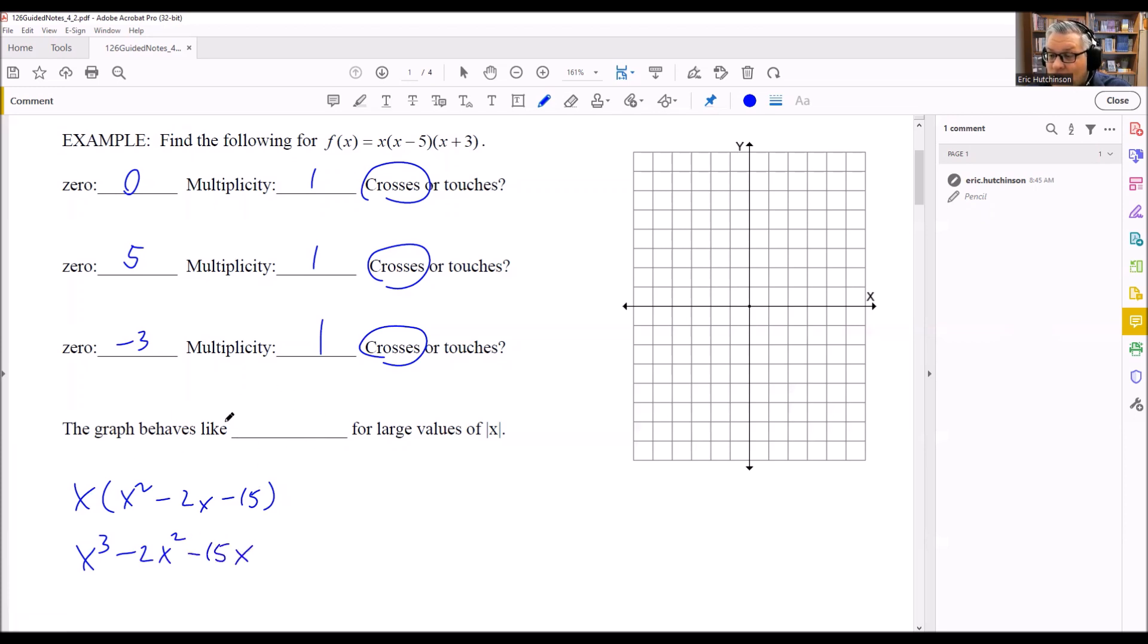The answer for this, the graph behaves like blank, that's going to be x cubed. It's just the leading term that you have there. And that's going to be your answer.